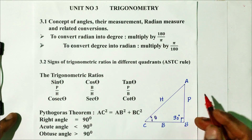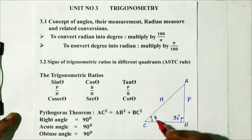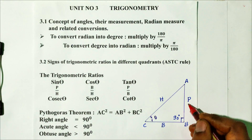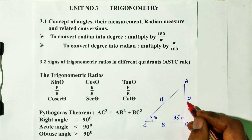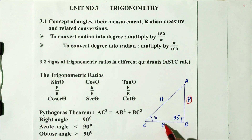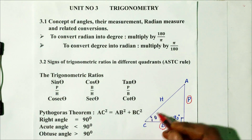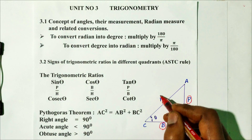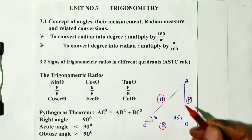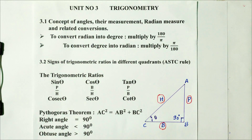We will name the 3 sides: 1) the opposite or perpendicular (with respect to theta), 2) the base (with respect to theta), and 3) the longest side is the hypotenuse.